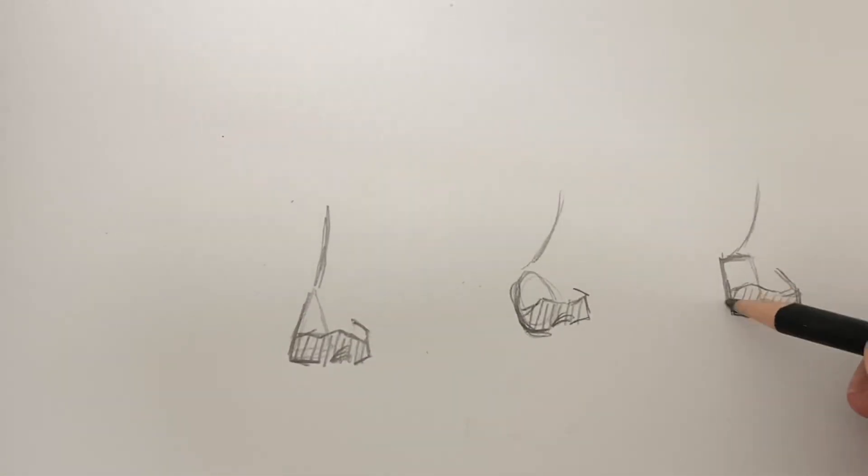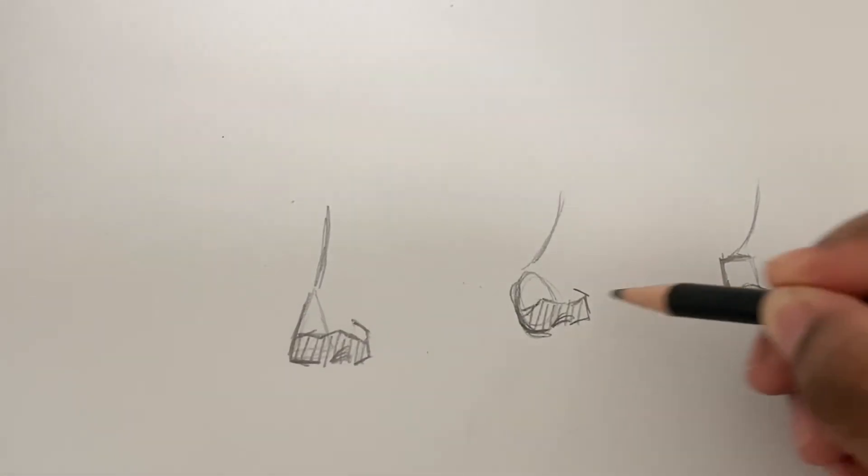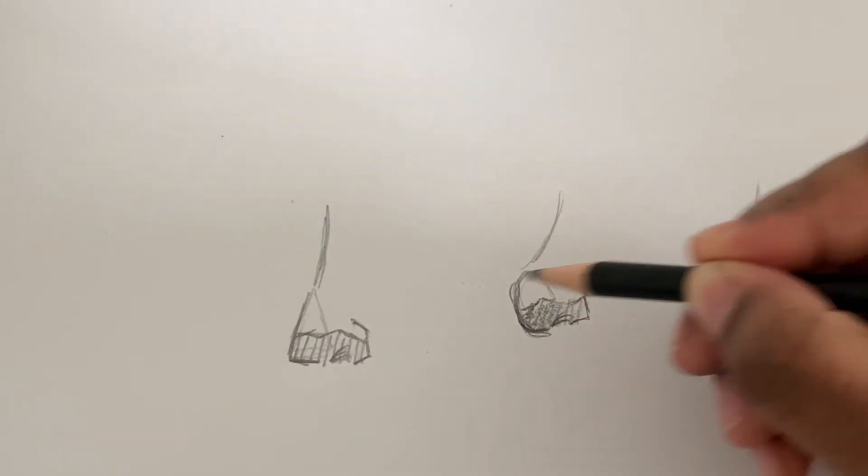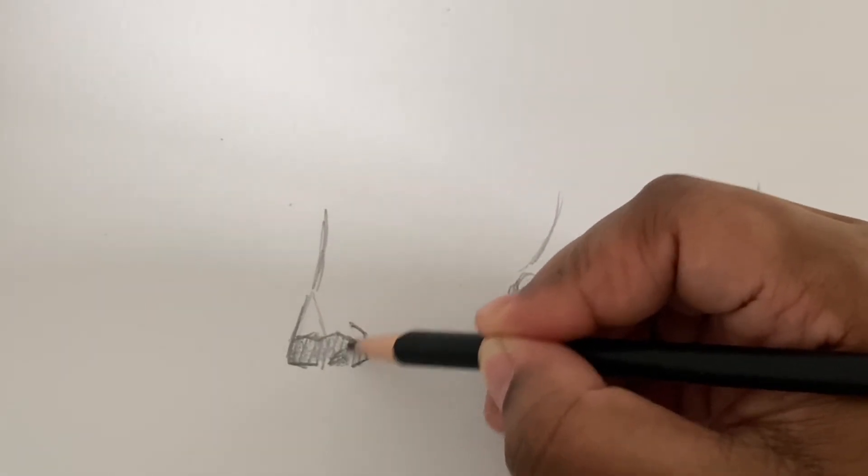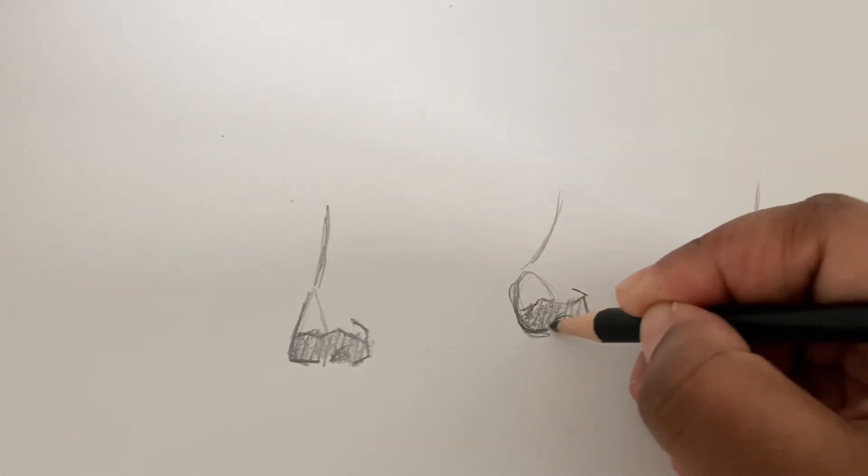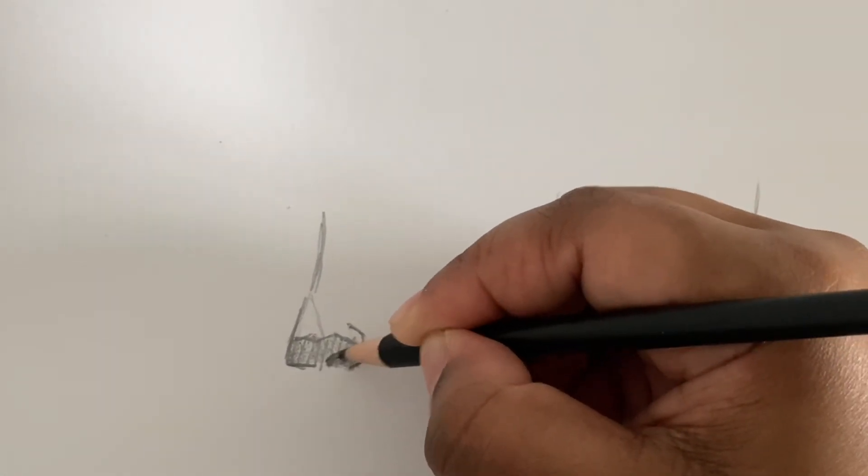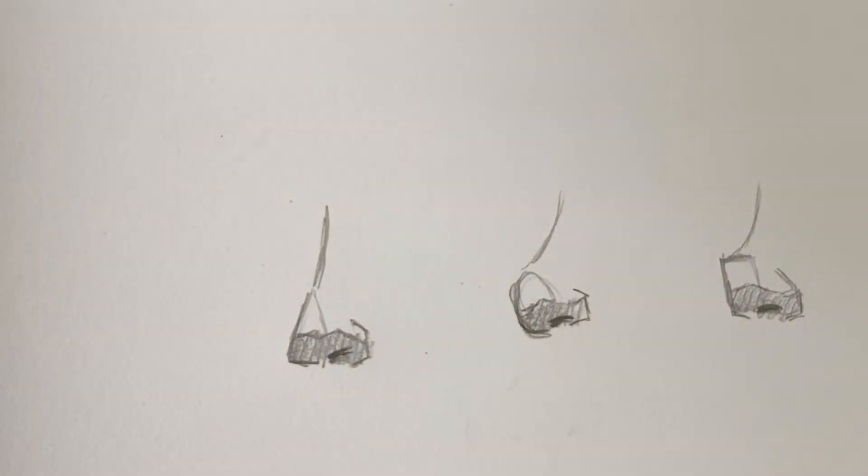So now what I'm doing at this point is optional, but I am going in with my 2B pencil that I always use and shading the bottom. I'm also going to go in with the sharpie to outline those lines because I'm extra.